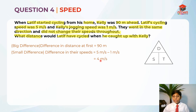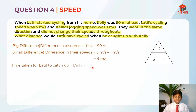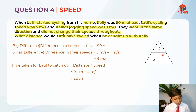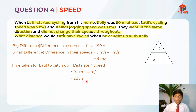I've always told you: big difference divided by small difference. So the time taken for Latif to catch up with Kelly is distance divided by speed — 90m divided by 4m per second — which gives us 22.5 seconds. If you don't remember that distance divided by speed equals time, you can look at the DST triangle. So it's 22.5 seconds — that's how long he took to catch up.